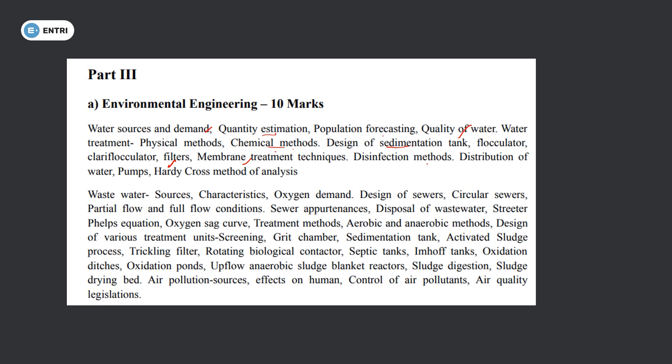Waste water: sources, characteristics, oxygen demand, sewer design, circular sewer, partial flow and full conditions, sewer appurtenances like manholes and lampholese. Disposal of waste water on land. Streeter-Phelps equation, oxygen sag. Treatment methods — aerobic and anaerobic: screening, grit chamber, sedimentation tank, activated sludge process, trickling filter, rotating biological contactor, septic tank, Imhoff tank, oxidation ditch, oxidation pond, UASB reactors, sludge digestion, sludge drying bed.